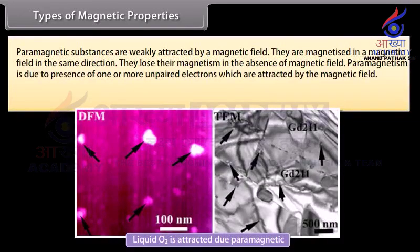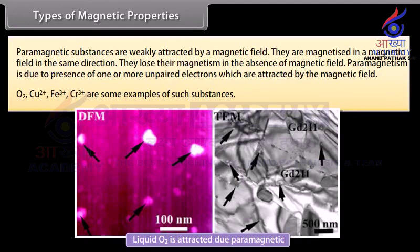Paramagnetic substances are weakly attracted by a magnetic field. They are magnetized in a magnetic field in the same direction and lose their magnetism in the absence of a magnetic field. Paramagnetism is due to the presence of one or more unpaired electrons which are attracted by the magnetic field. O₂, Cu²⁺, Fe³⁺, and Cr³⁺ are some examples.